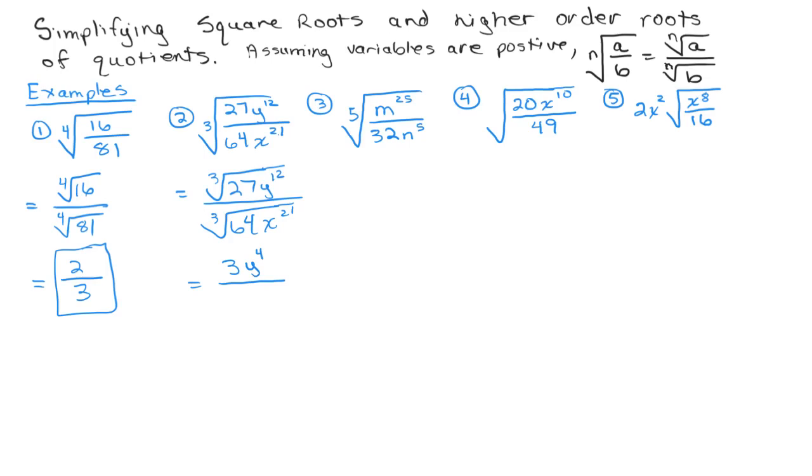Now in the denominator, 64 is also a perfect cube. So the cube root of 64 is 4. And the cube root of x to the 21st, again, that's just 21 divided by 3. It goes in evenly so that all of that comes out x to the 7th. And there's our second one.